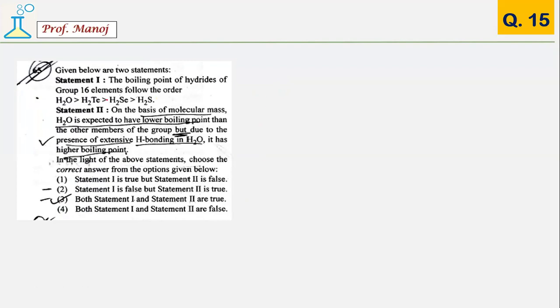Statement 1: boiling point of hydrides. This is a clear order given in NCERT, it is a true statement. Since water has the least molecular weight, it is expected to have lowest boiling point, which is also true. As we know, hydrogen bonding is present in water, so this is also true. Overall, both statements are true. Answer is 3, both statement 1 and 2 are true.